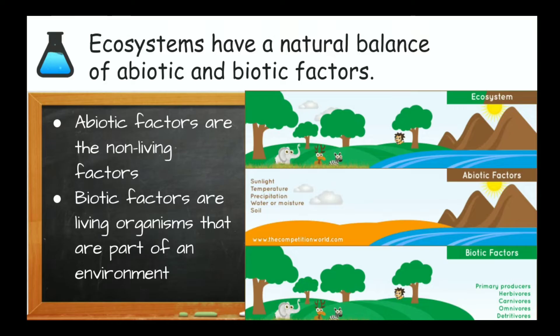Ecosystems have a balance between abiotic and biotic factors. So abiotic factors are the non-living factors. So those include things like sunlight, temperature, precipitation, water, soil, pH.